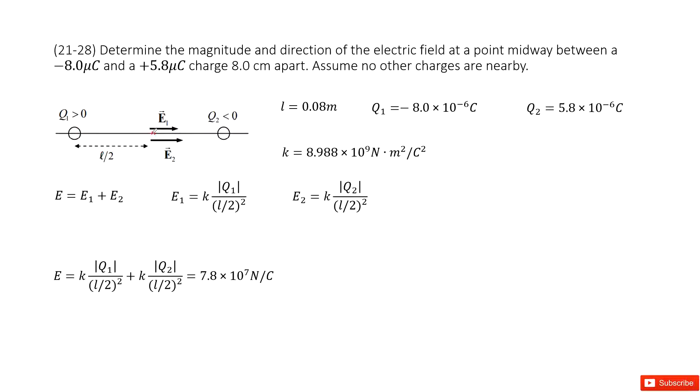Now, we need to determine the direction for q1 and q2. q1 is a positive charge, so the electric field will be radially outward. In the x-direction, in this line, it will move outward. So E1 moves outward from q1, pointing to the positive x-direction.